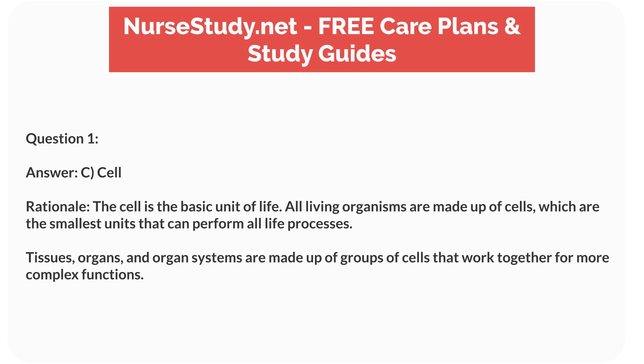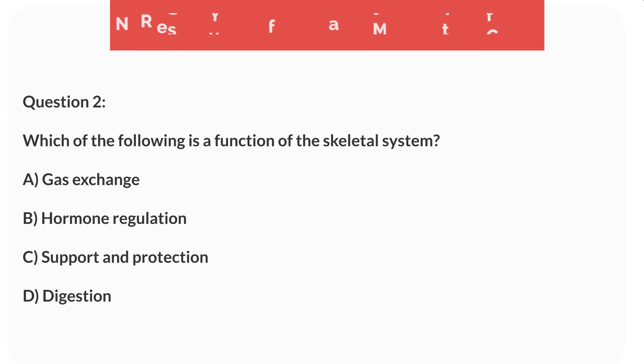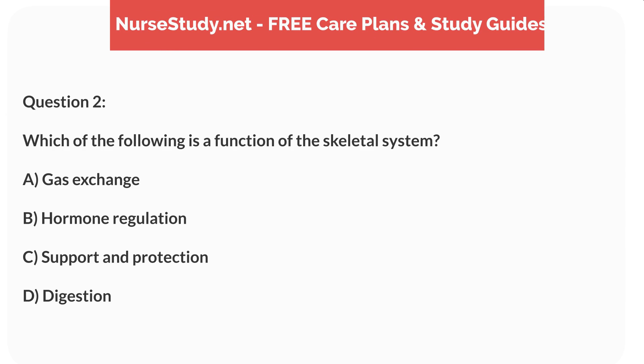Rationale: The cell is the basic unit of life. All living organisms are made up of cells, which are the smallest units that can perform all life processes. Tissues, organs, and organ systems are made up of groups of cells that work together for more complex functions.